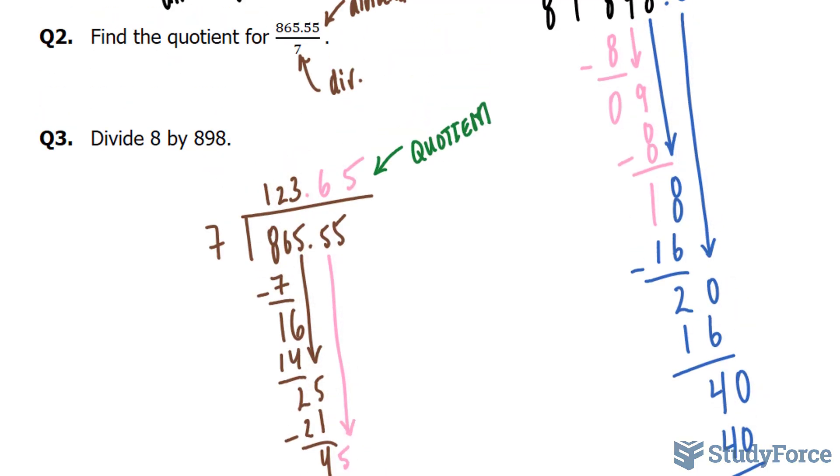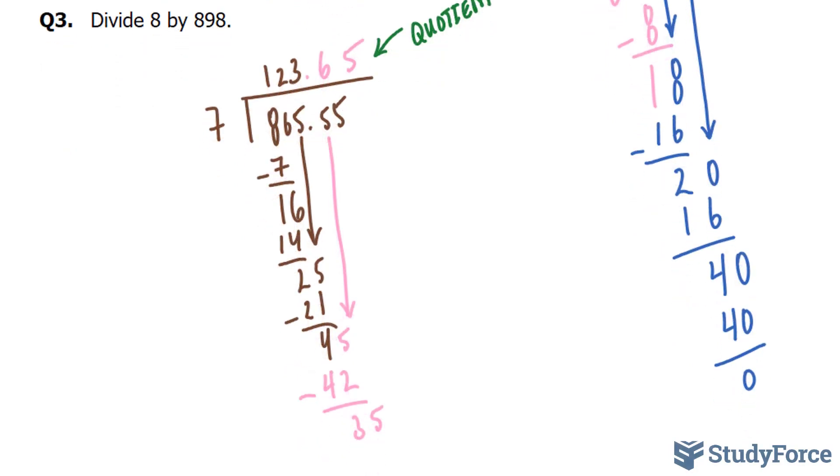Finally, in question number 3, this is the first time where our dividend is smaller than our divisor. If you look back at the previous two questions, the dividend has been greater than the divisor. That shouldn't change anything. Let's go ahead and set this up. We have 898.